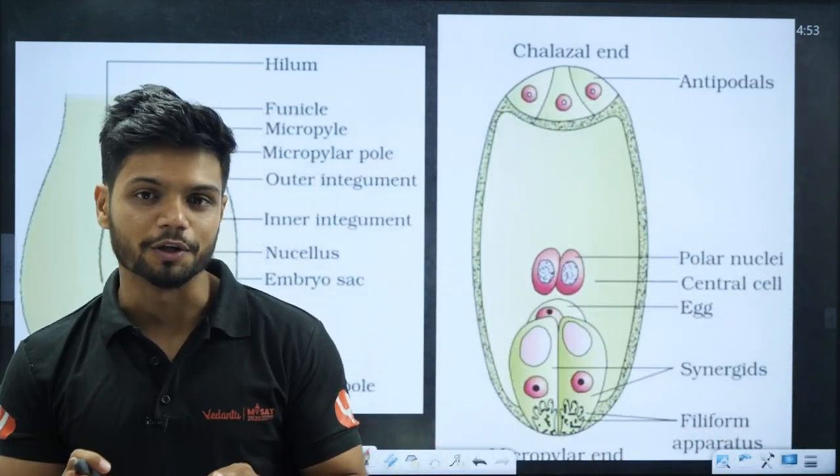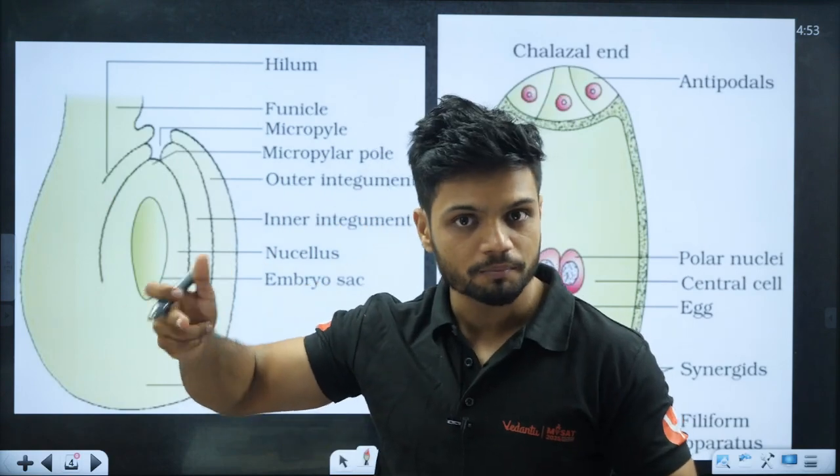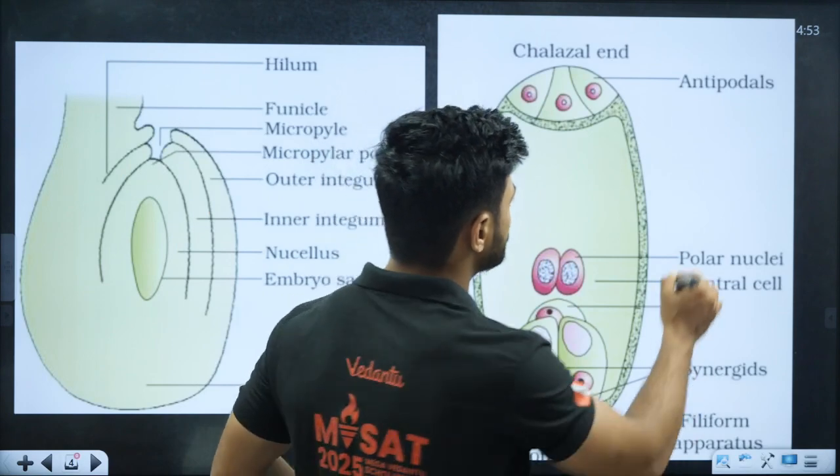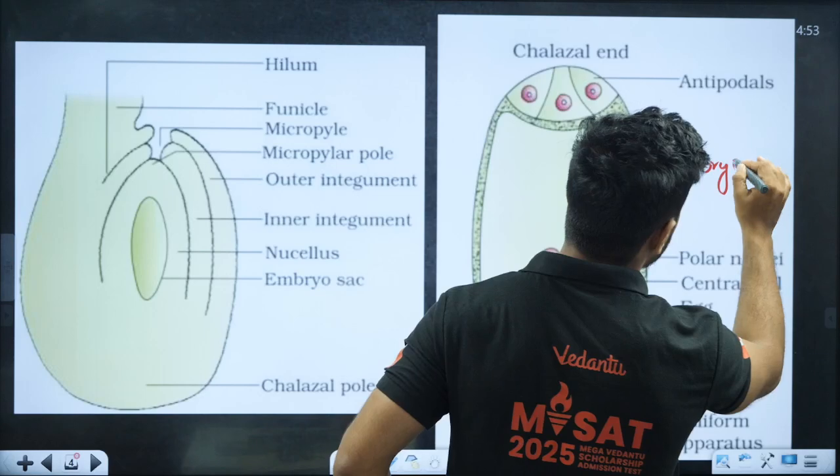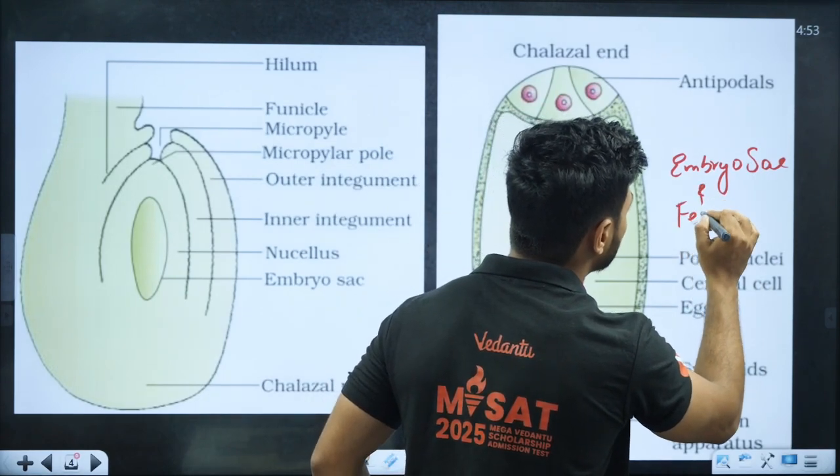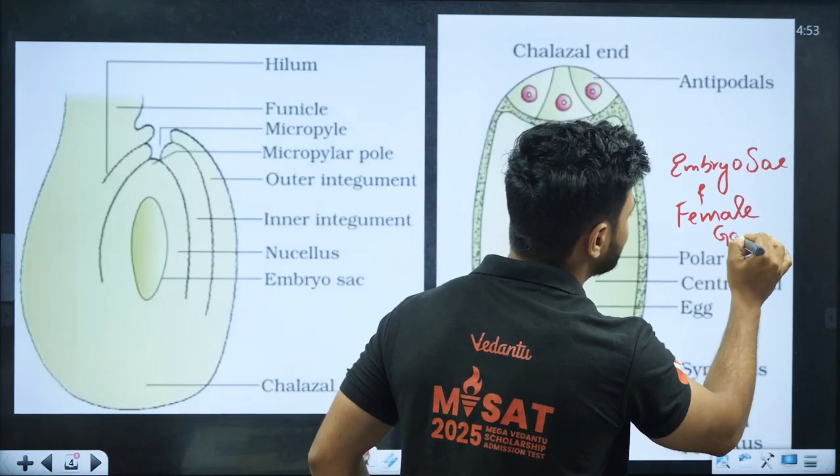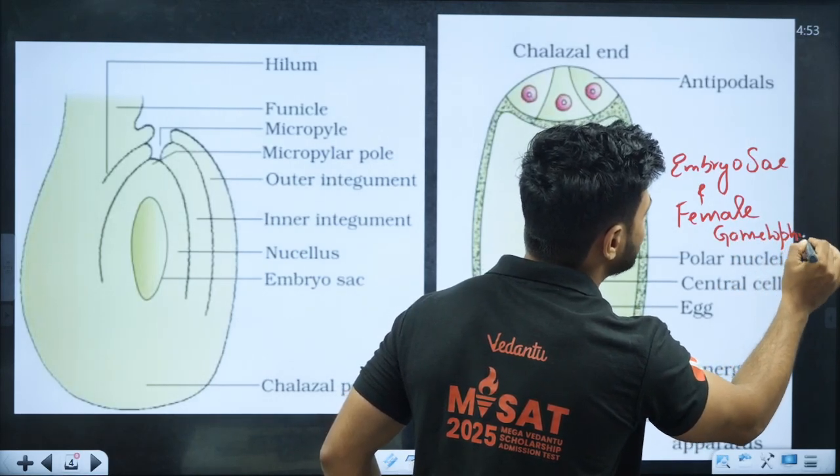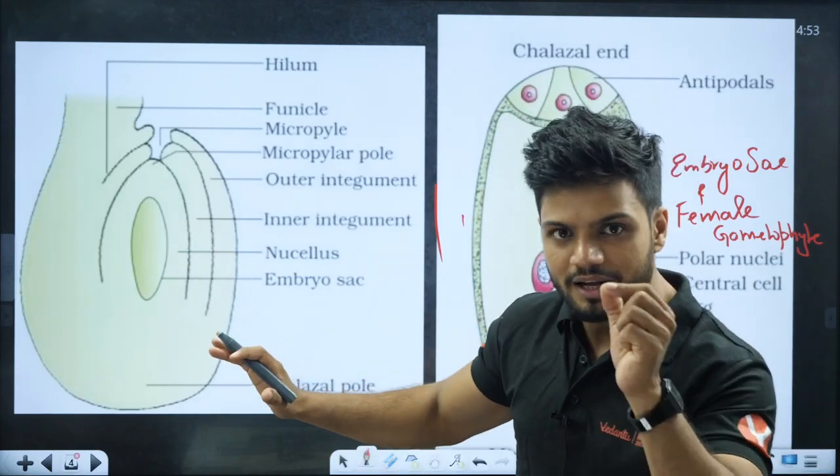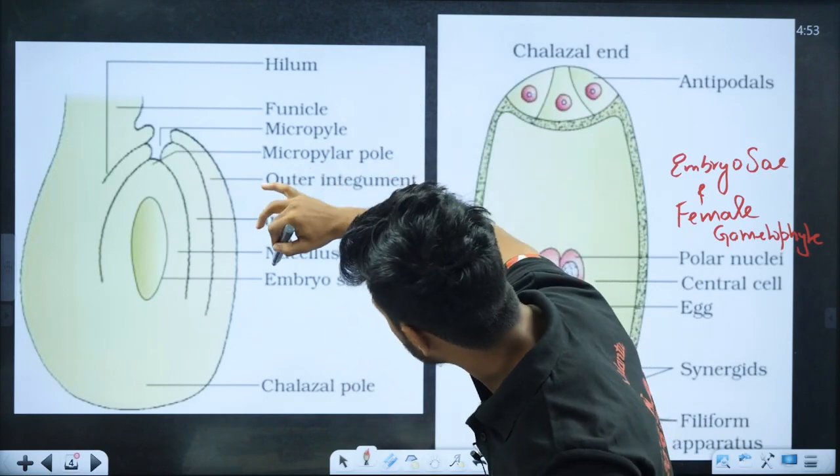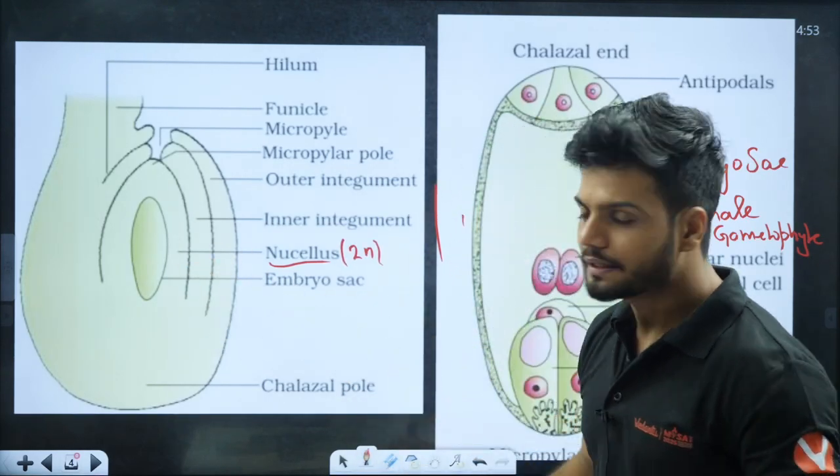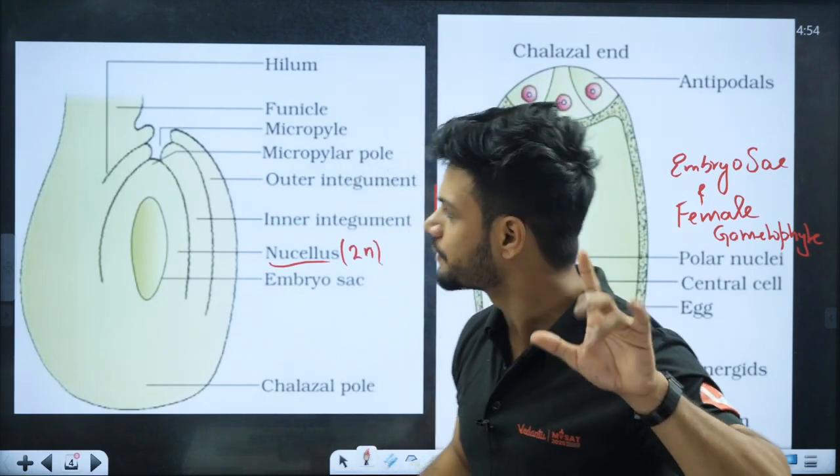Next diagram - the structure of anatropous ovule. Inside this is the embryo sac. In exams they can also ask you to draw the structure of embryo sac or the female gametophyte. Please remember both are the same - female gametophyte as well as embryo sac are the same things.